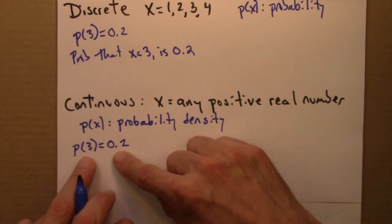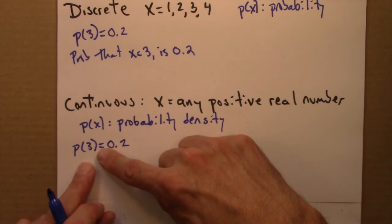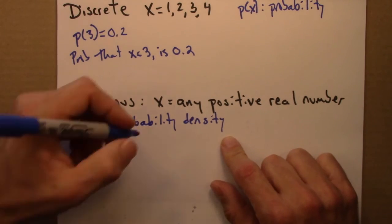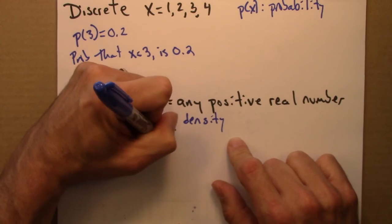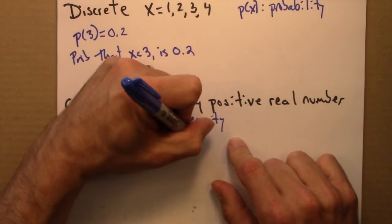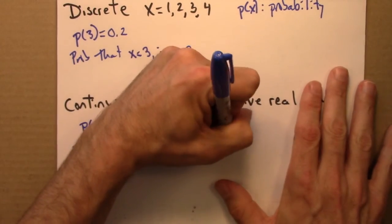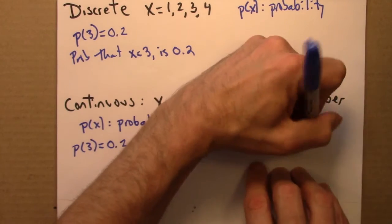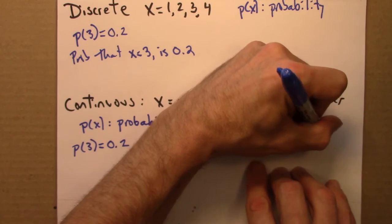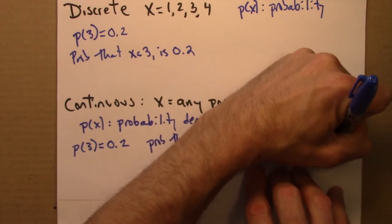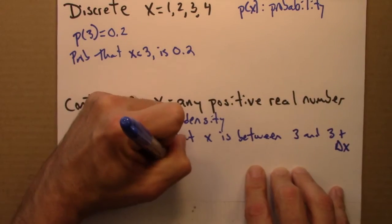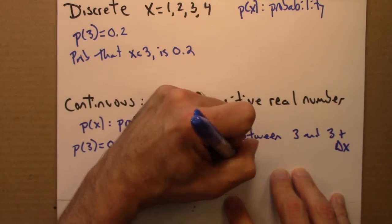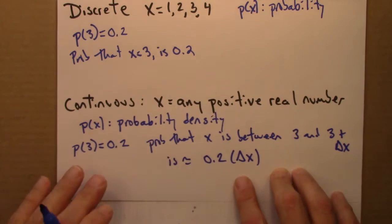So instead, we always speak about ranges of values of x in this case. So what this means is that the probability that x is between 3 and 3 plus delta x is approximately 0.2 times delta x.